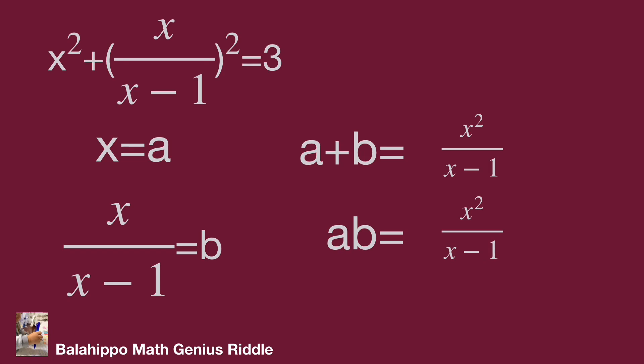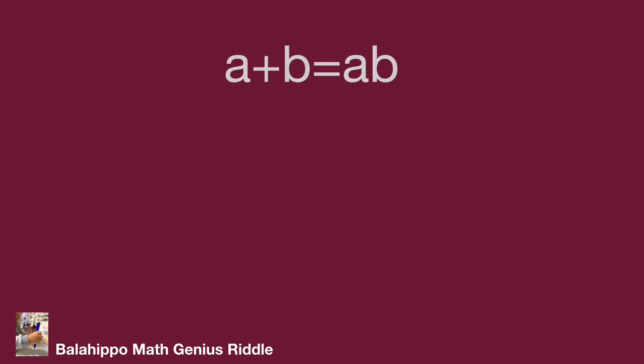After that, substitute x by a and x over (x minus one) by b into the given equation to get a squared plus b squared equal to 3. It's a new progress — we now have two new equations: a plus b equals a times b, and a squared plus b squared equals 3.